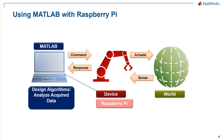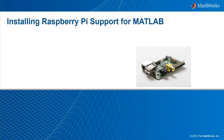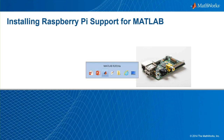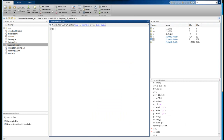Let's get started with our first demo and show how to install MATLAB support for Raspberry Pi. The first thing you need to do is go to Add-ons in the tool strip and choose Get Hardware Support Packages. So in MATLAB, we go to the Home tab, Add-ons, Get Hardware Support Packages, and then choose Install from Internet.